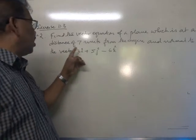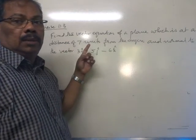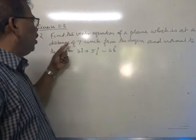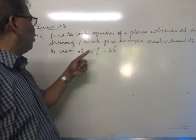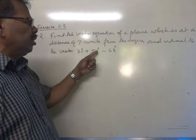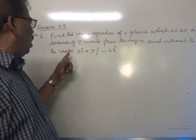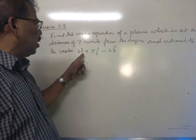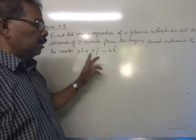Now question number 2 in exercise 11.3. Find the vector equation of a plane which is at a distance of 7 units from the origin and normal to the vector 2i cap plus 5j cap minus 6k cap.